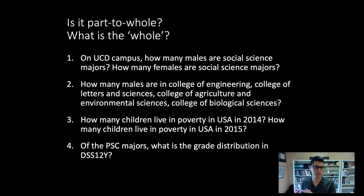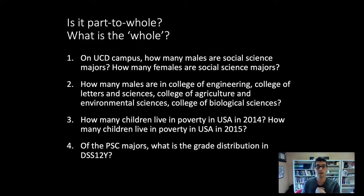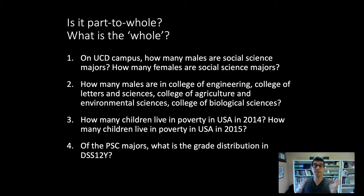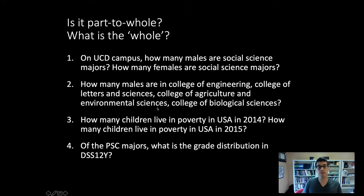What about number two — is this a part-to-whole relationship? How many males are in the College of Engineering, College of Letters and Sciences, College of Agriculture and Environmental Sciences, and the College of Biological Sciences? The whole in this case is males — males at UC Davis. We could have a pie chart where the whole pie represents male students at UC Davis, and the parts or slices are the College of Engineering, College of Letters and Sciences, College of Agriculture and Environmental Sciences, and College of Biological Sciences. So yes, this would be a part-to-whole relationship.